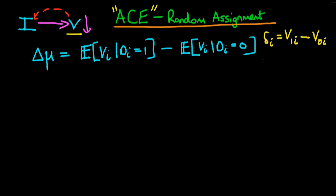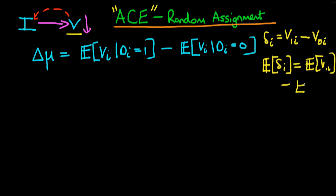What we're really interested in is the average level of delta I — the average causal effect. That's just the expectation of V1I minus the expectation of V0I. This is the thing we are actually looking to derive, and we called it the average causal effect for obvious reasons.